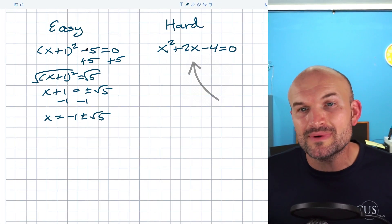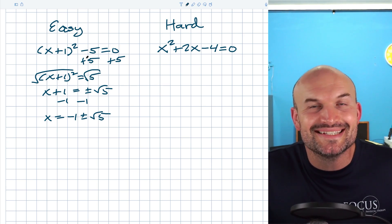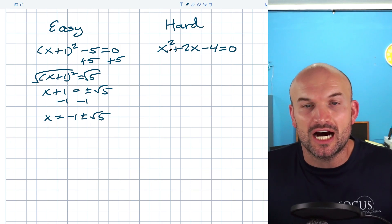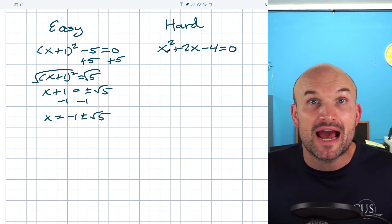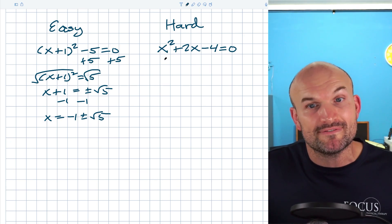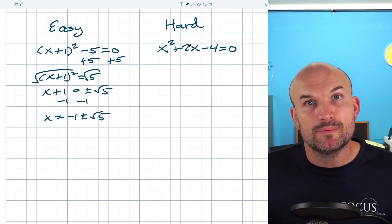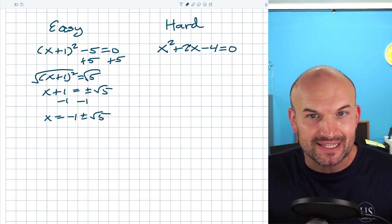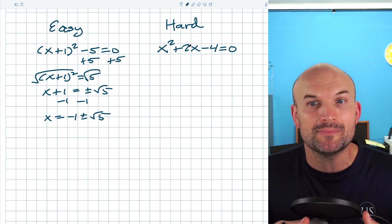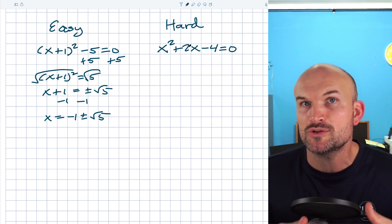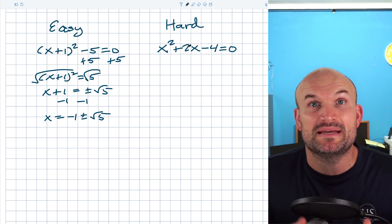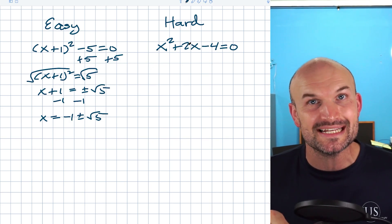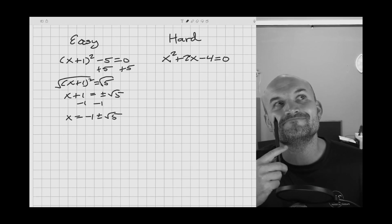Now this is a hard example, and the reason why is because it doesn't look like the easy one. We can't apply our inverse operations — we can't just isolate or undo the operations happening to x because we have more than one x. So we have a couple options. We could look into factoring, and when we factor we want to set things into two factors equal to zero. The problem is I'm not aware of any two numbers that multiply to give a negative four and add to give a positive two.